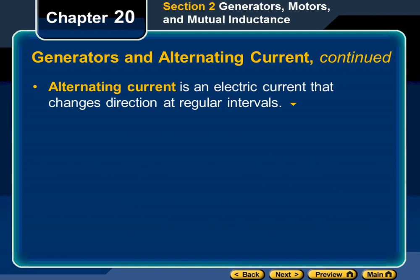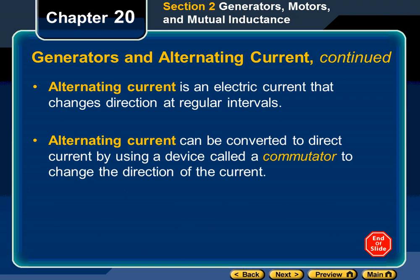Alternating current is electric current that changes direction at regular intervals. Alternating current can be converted to direct current by using a device called a commutator to change the direction of current. In a minute we'll look at another generator with a commutator, since this hand generator was producing alternating current that my multimeter could read. Our sensors are set up for direct current, so we'll see what a commutator looks like.